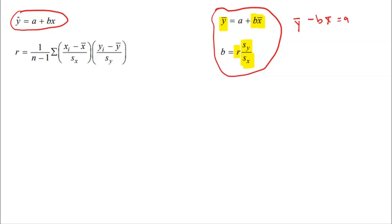There's also a formula to find R by hand — the correlation coefficient. I'm going to be completely honest: I have never seen an AP stats exam in many, many years that has ever asked you to find the correlation coefficient by hand. It's just never going to happen. In 99.999% of cases, they will give you R in the problem if you're required to use it.